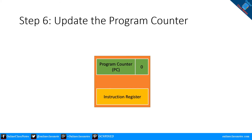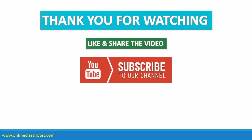Step 6: Update the PC (program counter). At the end of the execution of the current instruction, we need to update the program counter to the address of the next instruction, so that we can go back to step 1 where the CPU will fetch the next instruction. However, the program counter might need to be set to a different memory address if the instruction was a branch or jump instruction.